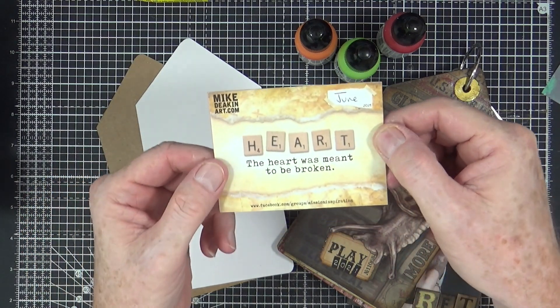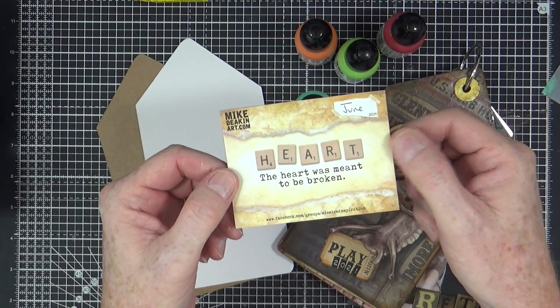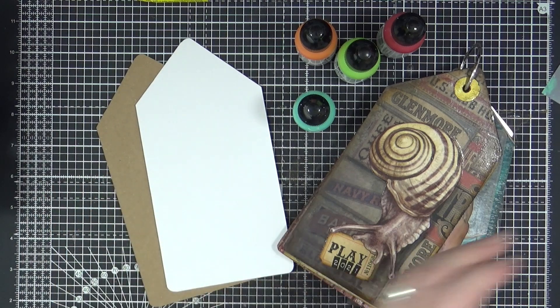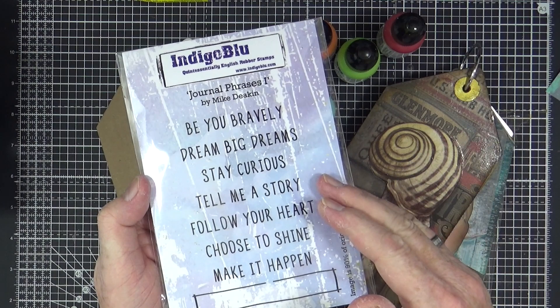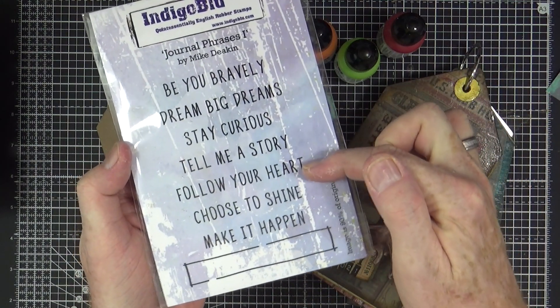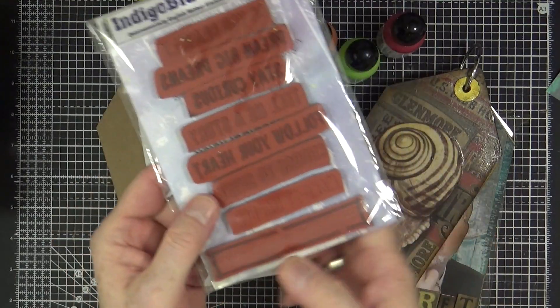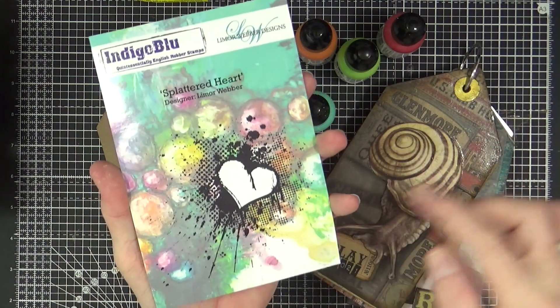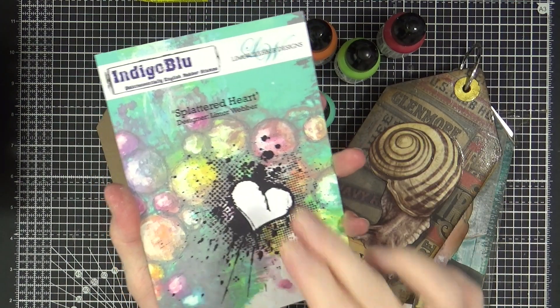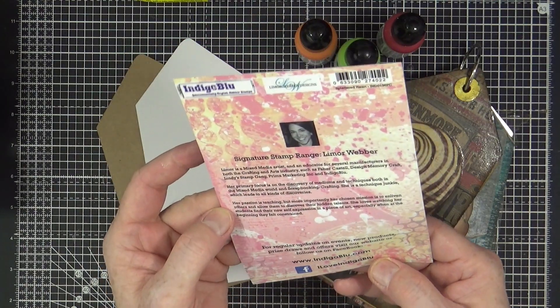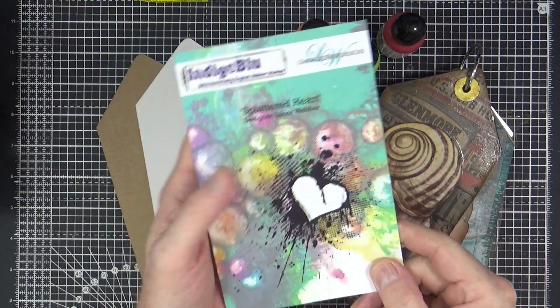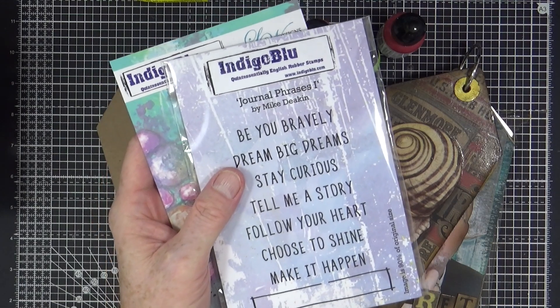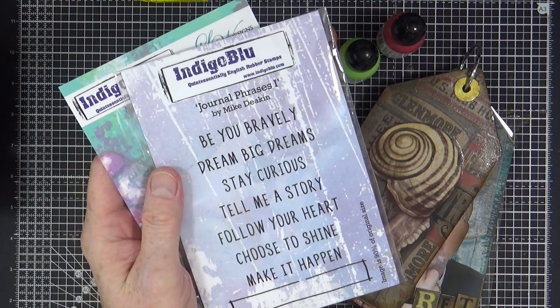The prompt for June is heart. I've gone through my collection of stamps and pulled out one of my journal phrase stamps from Indigo Blue. One of the phrases is follow your heart. My main focal point is also going to be an Indigo Blue stamp, this splattered heart designed by Limo Webber. This is going back a couple of years, probably about 2018. I think it's still available on the Indigo Blue website.